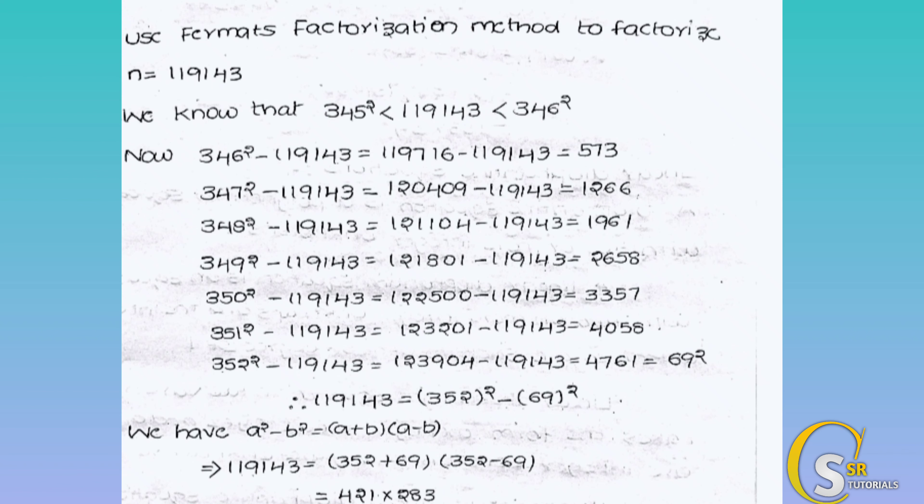Next, try 352: 352 squared is 123904, minus 119143 equals 4761. We take the square root of 4761 and it gives a perfect integer — 69 squared equals 4761. So we have found our values: a equals 352, b equals 69.